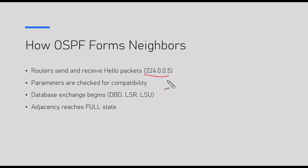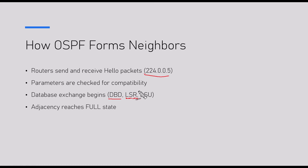Once we agree on the variables, we start sending information. The first thing sent is a Database Description (DBD) — a summary of what I have in my database, with a sequence number for every LSA. You check it to see if everything matches. If it doesn't, you send a Link State Request (LSR) asking me for my database. I then send a Link State Update (LSU), you update your database with it, and our databases become identical. After that we become adjacent — we say we are in full state.